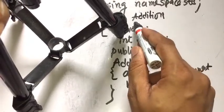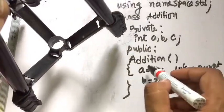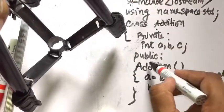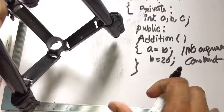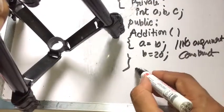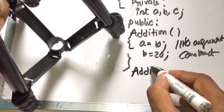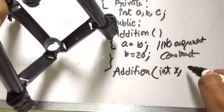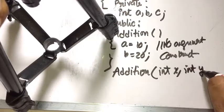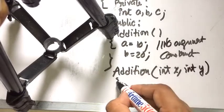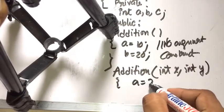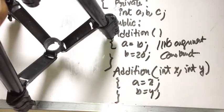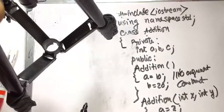When the name of the class is same as the function name, that is why it is a constructor. Next, there is another constructor 'addition' with parameters int x and int y — this is the parameterized constructor — where a copies the value of x and b copies the value of y.